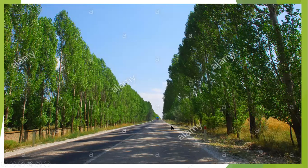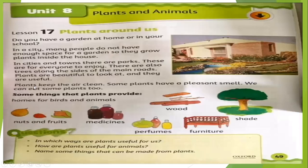Plants consume carbon dioxide, which is not very good for our health, for their production. Plants keep the air clean — they consume carbon dioxide and keep the air clean. Some plants have a pleasant smell, like flowers. We can eat some plants too. We eat plants like spinach, cabbage, radish, cucumber, and fruits. They come from different plants and trees.